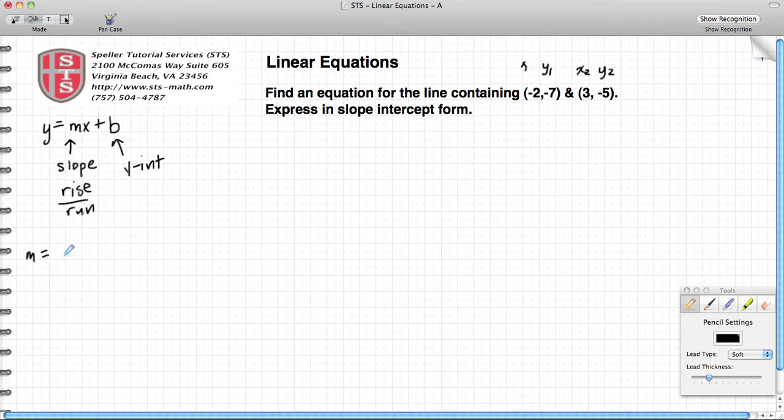Now let's look at the actual equation for finding the slope. That equation is y2 minus y1 divided by x2 minus x1. Now we're going to substitute those values in place. y2 is -5 minus y1, which is -7. Be sure to use the parentheses because we don't want these two negatives to mess us up when we're dealing with our signs. x2 is 3 and x1 is -2. Again, let's use those parentheses to keep our signs in order.